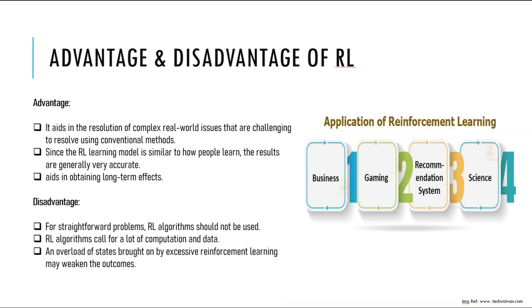Excessive training can lead to overloading of states, and the model may sometimes outperform — but not every time. This can result in the model getting bad results, especially if too much memory is consumed in processing training data. Too much training also introduces biases, which will lead to returning bad actions.